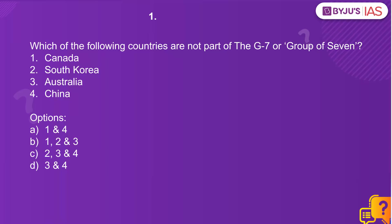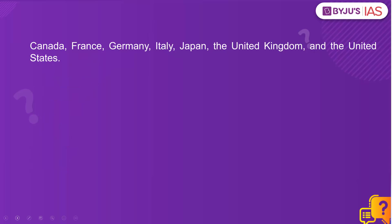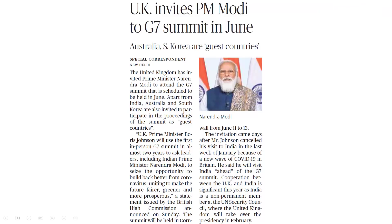Canada is part of G7. South Korea, Australia, and China are not. So C2, 3, 4 is the right answer. Which countries make up the G7? Canada, France, Germany, Italy, Japan, United Kingdom, and the United States. Let's look at the context.